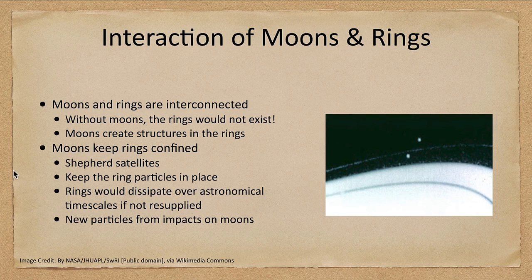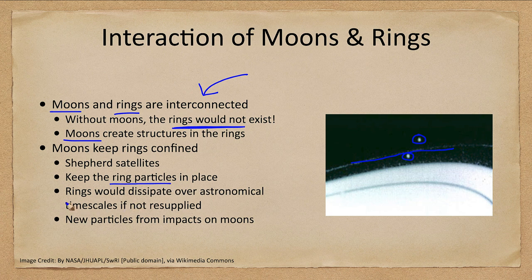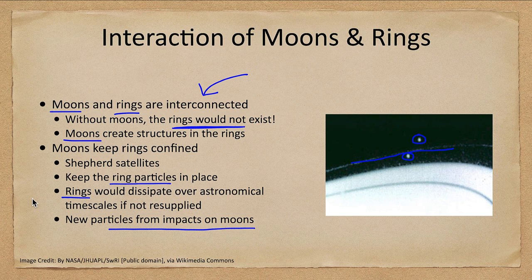The moons and rings are interconnected — without the moons, there would be no rings. The moons create structures in the rings and keep them confined through shepherding satellites, with one satellite on each side of a ring traveling around and keeping particles from straying too far. Models show that rings would dissipate over astronomical timescales if not resupplied, so perhaps impacts on the moons throw new material into the ring system, keeping them replenished over longer timescales.